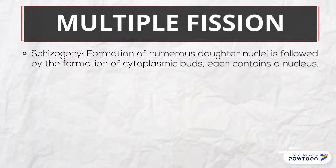In schizogony, the formation of numerous daughter nuclei is followed by the formation of cytoplasmic buds, each containing a nucleus.